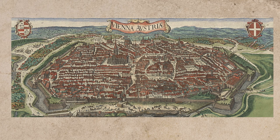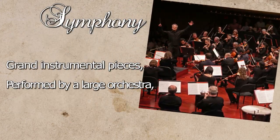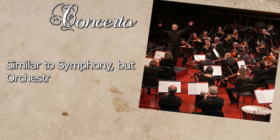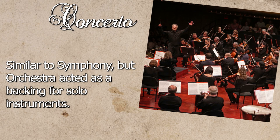Along with Beethoven and Haydn, Mozart created and perfected the musical forms that marked the classical period. Symphonies were grand and elaborate instrumental pieces performed by a large orchestra, usually in several sections or movements. Concertos were similar to symphonies but the orchestra would act as an accompaniment to one or more solo instruments.